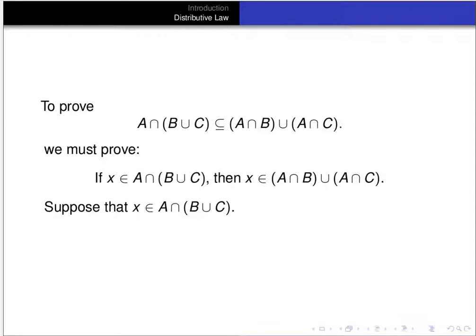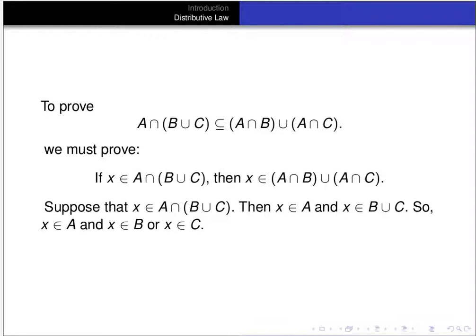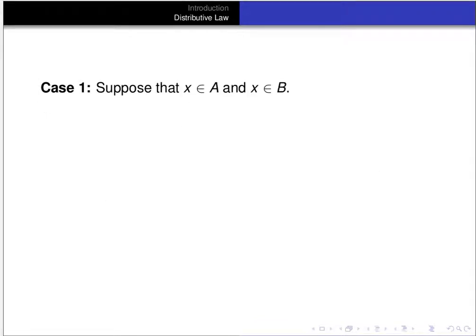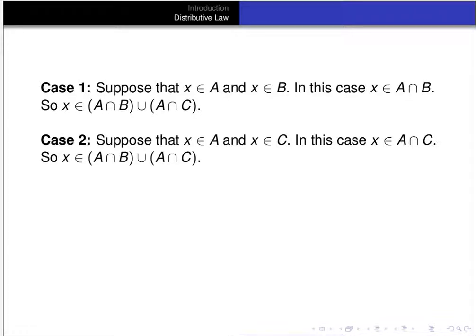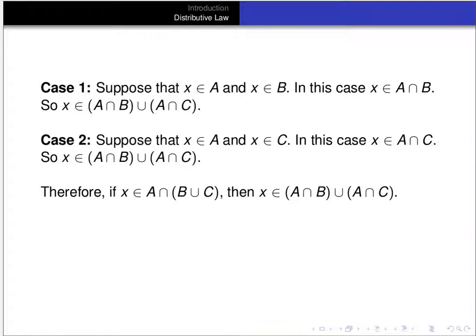Suppose x is an element of A∩(B∪C). It follows that x is in A and x is in B∪C — so x is in A and x is in B or C. That gives two cases. Case one: x is in A and x is in B. Then x is in A∩B, so it's in (A∩B)∪(A∩C). Case two: x is in A and x is in C. Then x is in A∩C, so again it's in (A∩B)∪(A∩C). Therefore A∩(B∪C) ⊆ (A∩B)∪(A∩C).